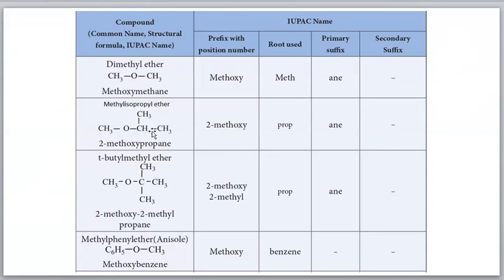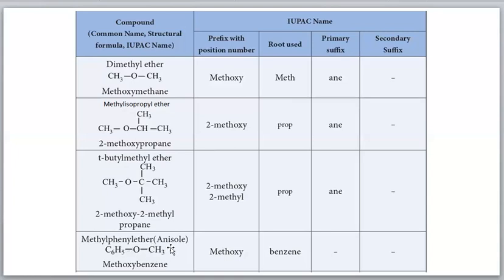For tert-butyl methyl ether: ignore 'tert', compare 'butyl' (b) and 'methyl' (m) - b comes first, so tert-butyl methyl ether. For methyl phenyl ether, compare m and p - methyl comes first, so methyl phenyl ether. This compound also has the common name anisole.